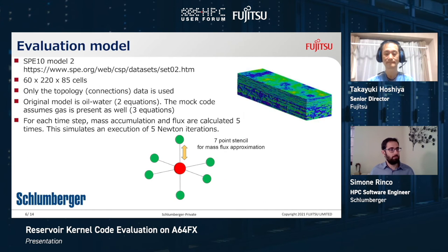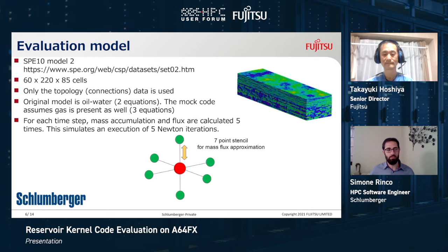In our mock code we have used a very well-known problem in the industry called SPE10 Model 2, which is a model with approximately one million cells. It is not very small but not huge either — we believe one million cells is a good size to assess the performance of a given hardware. While the original model has only two phases — oil and water — we have also simulated the presence of the gas phase, because typically we have reservoirs with gas as well. For each time step we have simulated the calculation of both the mass accumulation and the mass flux.